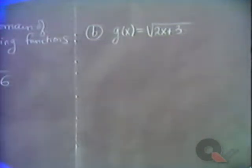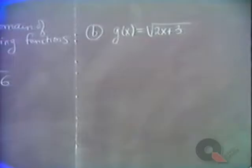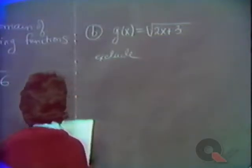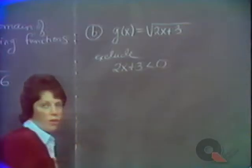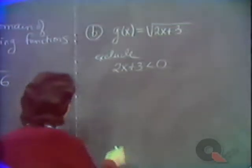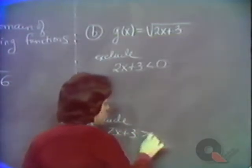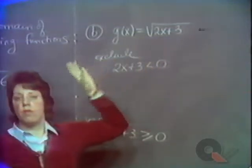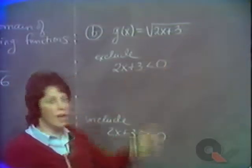Here we don't have any denominator to worry about for division by zero, but we do have a square root. We know we'd be in trouble if it were the square root of a negative number. So we must exclude all those x values for which 2x plus 3 would be less than zero. Or you could take the other approach and include all those values for which 2x plus 3 is greater than or equal to zero. There is nothing wrong with the square root of zero — the square root of zero is zero. You'd only be in trouble with a negative number.